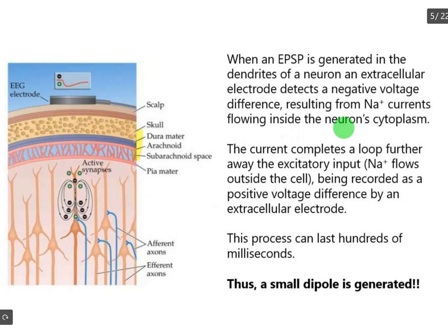When EPSP is generated in the dendrites of a neuron, an extracellular electrode detects a negative voltage difference resulting from currents flowing inside the neurons' cytoplasm. The cytoplasm is a clear fluid within the neuron that composes the bulk of cellular material and provides a suspension medium for free-floating molecules. Sodium currents flow inside the neuron's cytoplasm, and sodium flows outside the cell, being recorded as a positive voltage difference by the extracellular electrode. This process can last hundreds of milliseconds, while an action potential lasts only about one millisecond. This entire process creates a dipole detectable by an external electrode.